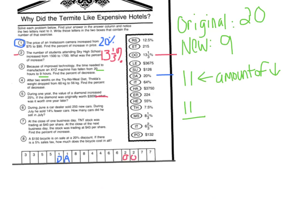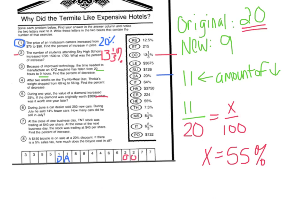The amount of decrease always goes over the original amount — what you started at — and we figure out what percent that would be. What percent is 11 out of 20? We take 11 times 100, which is 1,100, divided by 20, and X equals 55%. So it's a 55% decrease in the amount of time it takes to manufacture. I look over to the right — that's HE. So box number 3 gets HE.